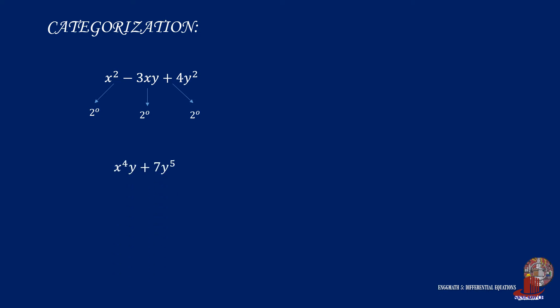Next, x⁴y + 7y⁵: the first term would have a total degree of 5, and the second term shows y to the fifth power, so having similar degrees makes this function homogeneous. The third function is the square root of x + 4y. With x and y in the first degree, the radical means they are multiplied by one-half, so the degree will be one-half.